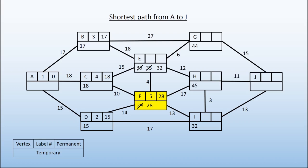It's also connected to H, so we can get there in 45. The 28 plus the 17 gives us 45, and for F to I, 28 plus 13 would give us 41, but we already have 32 in that place, so we don't replace the temporary label. We can already get to I in 32, so why would we want to get there in 41? Remember, we're looking for the shortest distance, so we leave the 32 exactly where it is.